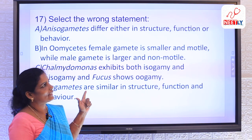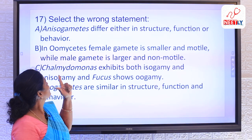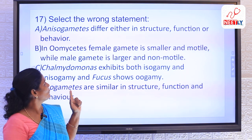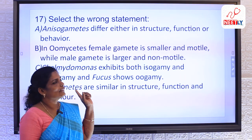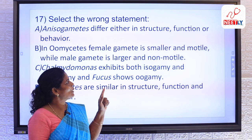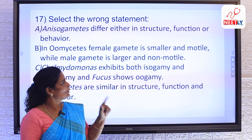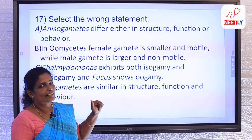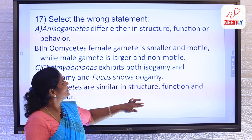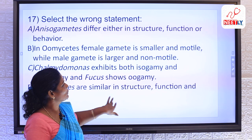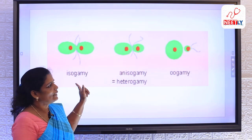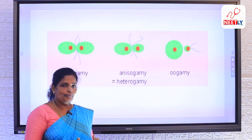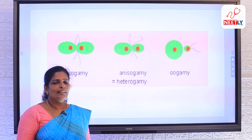Option B is correct because the question asks to select the wrong statement. In oogametes, the female gamete is smaller and motile while the male gamete is larger and non-motile. That is a wrong statement because isogamete is nothing but the fusion of similar gametes.